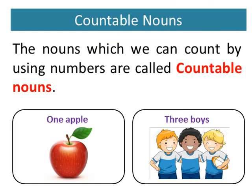The nouns which we can count by using numbers are called countable nouns. For example, one apple, three boys. We can count apple and boys, so they are countable nouns.